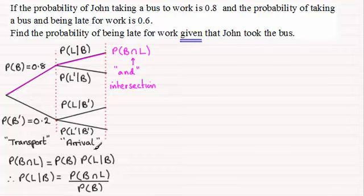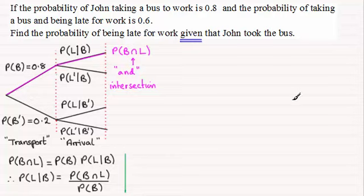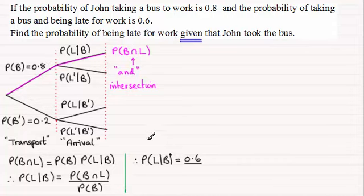We know the probability of taking the bus and being late is 0.6. So the probability that John is late for work given that he took the bus equals 0.6 divided by the probability that he took the bus, which is 0.8. Work that out and you end up with 0.75. So hopefully that's very straightforward.